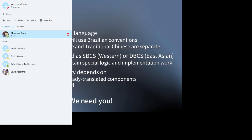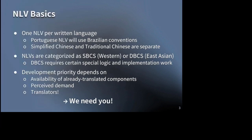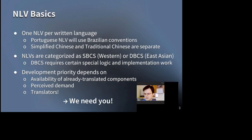NLVs are divided into two broad types: single byte character set, or SBCS, and double byte character set, or DBCS. SBCS is what most of us use, and includes all Western languages like English, French, German, Dutch, and so on. DBCS is specific to four East Asian languages: Japanese, Korean, and the two versions of Chinese. DBCS is treated specially because these NLVs include several additional components and require some extra work in development.